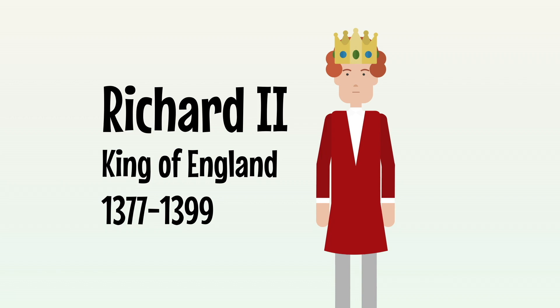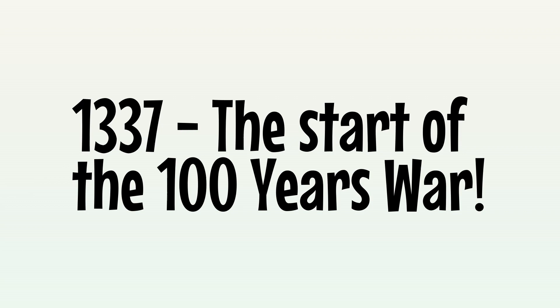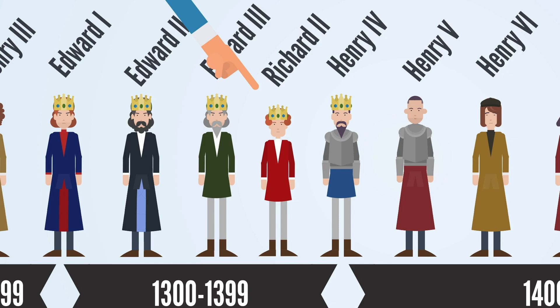Richard II ruled England from 1377 to 1399. He's the 8th Plantagenet King to have ruled England. He's best known for facing down the Peasants' Revolt in 1381, continuing the 100 Years' War started by his grandfather Edward III, and for being overthrown by his cousin Henry Bolingbroke, who would succeed him as Henry IV. He appears in our Kings and Queens timeline, ruling around 650 years ago.